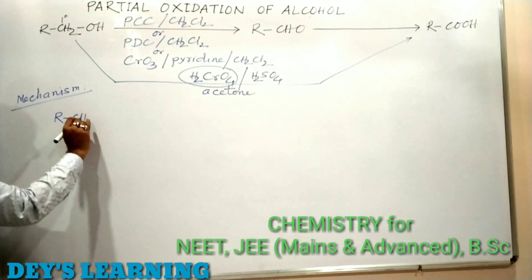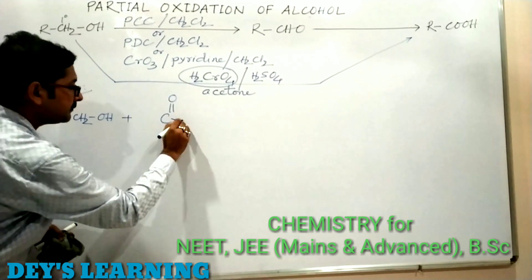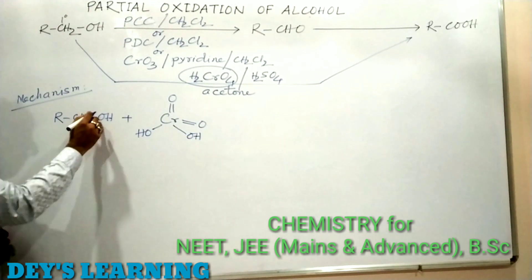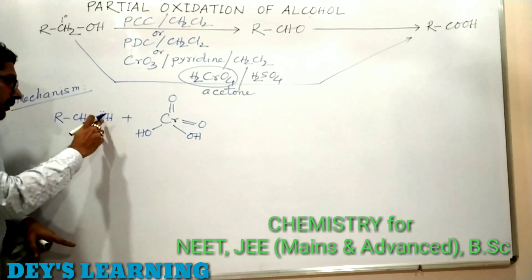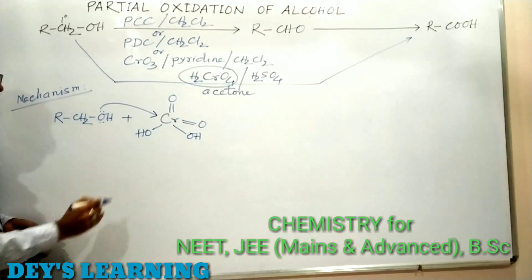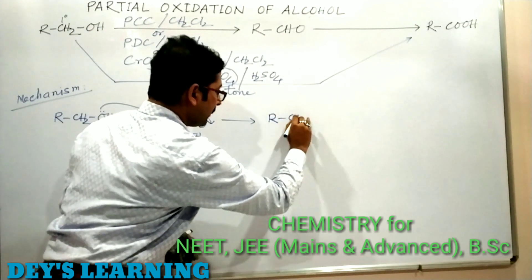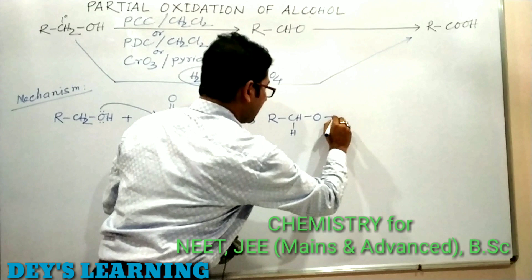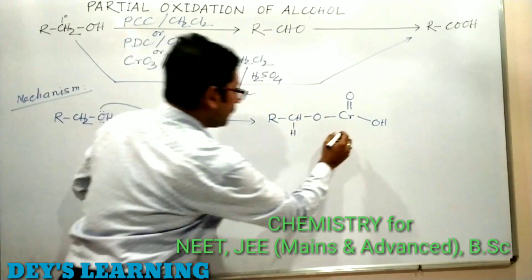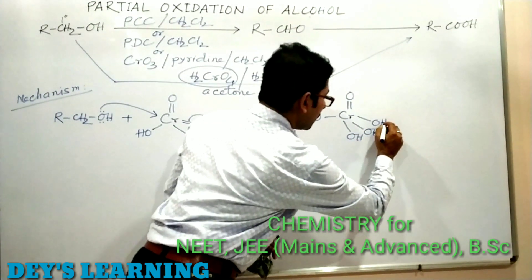In the first step, RCH2OH (our alcohol) reacts with chromic acid H2CrO4. Alcohol is a nucleophilic molecule, so the lone pair on the oxygen attacks at the positive center of chromium, breaking a pi bond, giving RCH(H)–O–Cr(=O)(OH)–OH. One pi bond is broken from chromium.